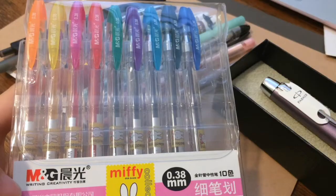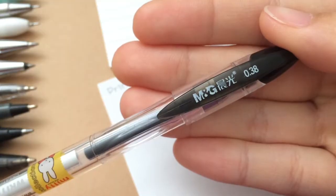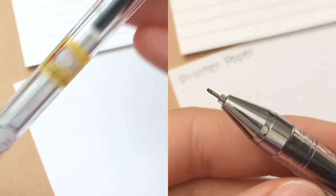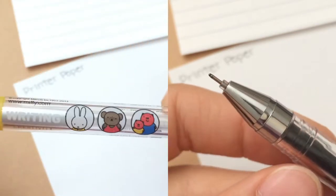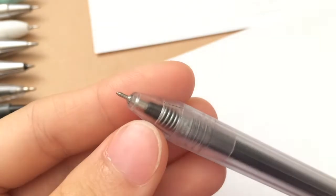So the first one that we have here is this Miffy collection by MNG and it has a tip of 0.38. And this pen has a needle tip which is really thin. Next up we have this 0.38 gel ink pen from Muji.